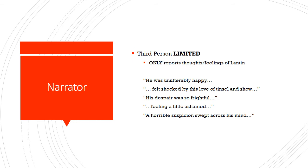We hear what's going on inside Lantan: 'He was unutterably happy.' 'He felt shocked by this love of tinsel and show.' 'His despair was so frightful.' 'He was feeling a little ashamed.' 'A horrible suspicion swept across his mind.' All these examples show us the inside of Lantan's mind. We never get the inner thoughts of the wife or any other characters, nor does the narrator tell us what the wife was doing. So we are limited — even though it's third-person — to Lantan's perspective.